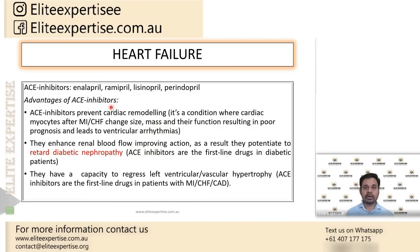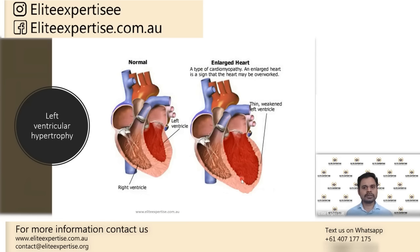ACE inhibitors prevent cardiac remodeling. Not only ACE inhibitors, but also beta blockers are one of the most important drugs in heart failure, and they also prevent such cardiac remodeling. Similarly, spironolactone, which is an aldosterone antagonist, also shows the same property — it prevents cardiac remodeling, prevents left ventricular hypertrophy, and prevents the development of further cardiac arrhythmias.